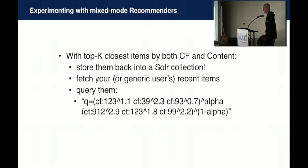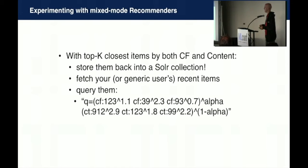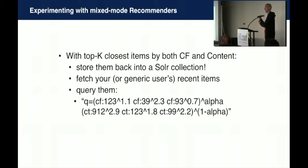Being able to store recommendations in a layer you can serve from and have that be your production layer is really nice. It lets a proof of concept also be something you would serve in production. You can do A-B testing on an alpha parameter that tunes between the collaborative filtering field and the content-based similarity field - those being the fields of related item IDs that you indexed into Solr after doing the Spark processing.